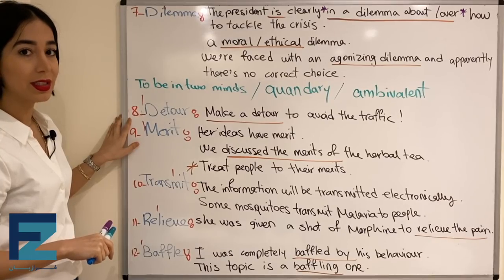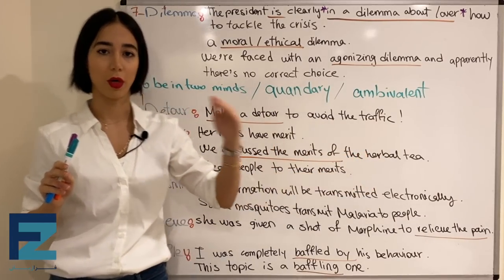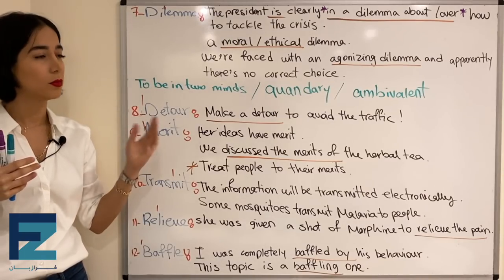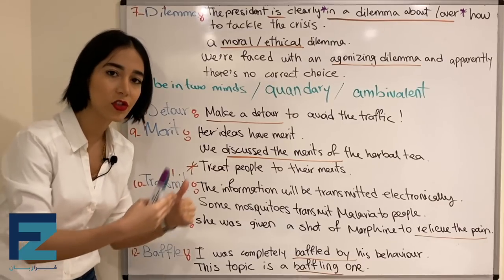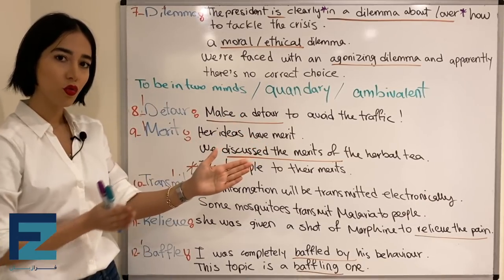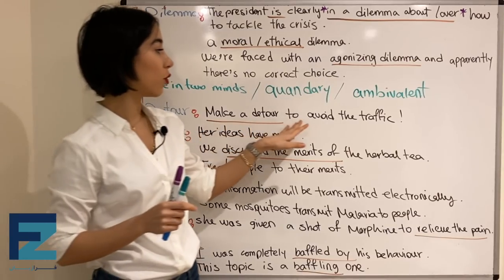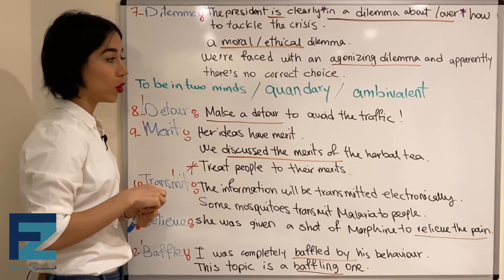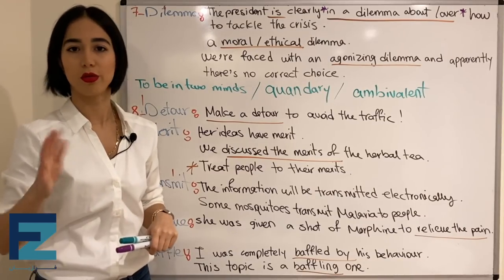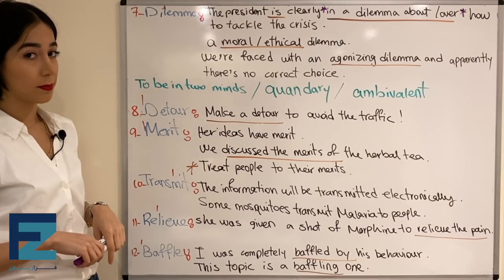Number eight: detour. The stress is on the first syllable — detour. Detour means to use a less direct way or a less direct route. هر دو تلفظ route و route درسته. یعنی یک راهی که کمتر مستقیمه — راه طولانی‌تر و غیرمستقیم‌تر. For example: 'Make a detour to avoid the traffic.' یعنی از کوچه‌پس‌کوچه برو که کمتر به ترافیک بخوری — make a detour.